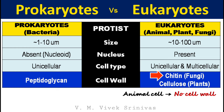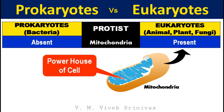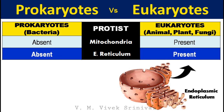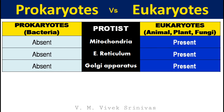Fungal cells possess a cell wall rich in chitin. Ribosome size: bacterial cells possess smaller ribosomes — 70S — compared to eukaryotic ribosomes, which are 80S. Mitochondria, the powerhouse of the cell, are absent in prokaryotes but present in eukaryotes. Endoplasmic reticulum and Golgi apparatus are also absent in prokaryotes but present in eukaryotes.